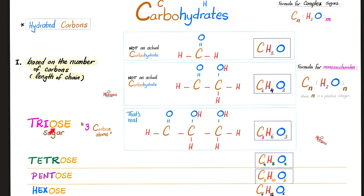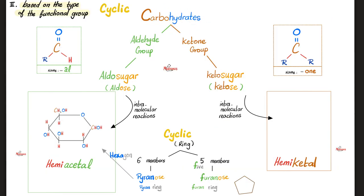A famous triose is glyceraldehyde. How about tetrose? Erythrose. How about pentose? Ribose and ribulose. How about hexose? Glucose, fructose, and galactose. Some carbohydrates have an aldehyde group — we call them aldo sugars or simply aldoses. How about the others that have a ketone group? We call them keto sugars or ketoses. And then when I give you the ring structure, if you have an aldehyde group, you are a hemiacetal. How about a keto group? Hemiketal.